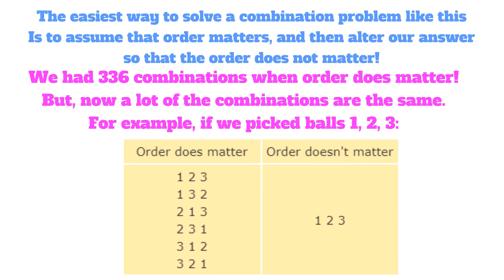For example, if we pick the balls 1, 2, and 3 and the order did matter, then 1-2-3, 1-3-2, 2-1-3, 2-3-1, 3-1-2, and 3-2-1 would all be different arrangements. But when order does not matter, they are all the same and they all equal the arrangement 1, 2, 3.